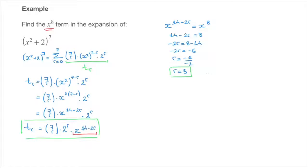The x to the power of 8 term is t sub 3, which equals the binomial coefficient 7 choose 3, times 2 to the power of 3, times x to the power of 14 minus 2 times 3.